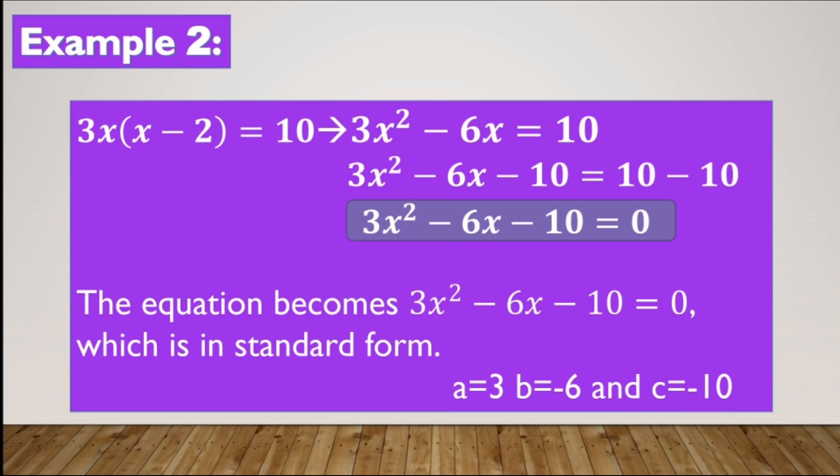Let us expand 3x times x minus 2 is equal to 10. By using the distributive property, 3x times x is equal to 3x squared, and 3x times negative 2 is equal to negative 6x. So we have 3x squared minus 6x is equal to 10. To make the right side equal to 0, we add the additive inverse of 10, which is negative 10, to both sides. So we have 3x squared minus 6x minus 10 is equal to 0, which is the standard form, where a is equal to 3, b is equal to negative 6, and c is equal to negative 10.